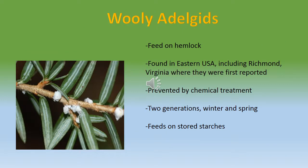The hemlock woolly adelgids feed on hemlock, a type of evergreen. They're found in the eastern United States, including Richmond, Virginia, where they were first reported. They can be prevented by chemical and biological treatment that works with their life cycle. There are two generations that hatch every year — one in winter and one in spring. Instead of feeding on sap, the woolly adelgids feed on the stored starches in the hemlock, causing even more damage to the tree.